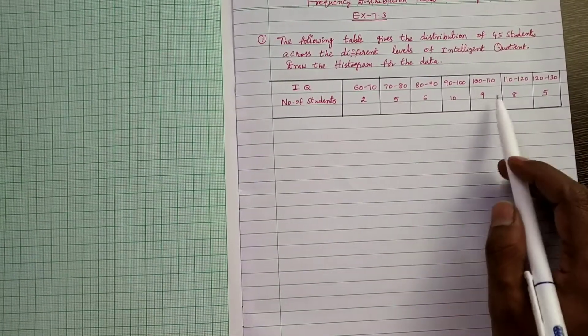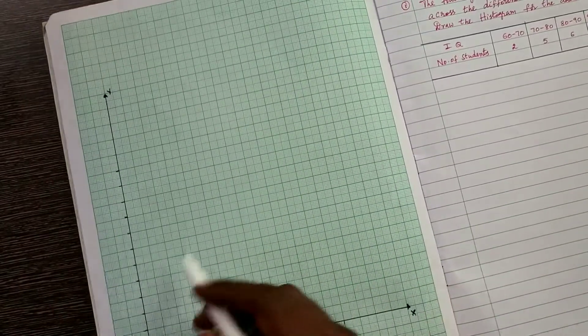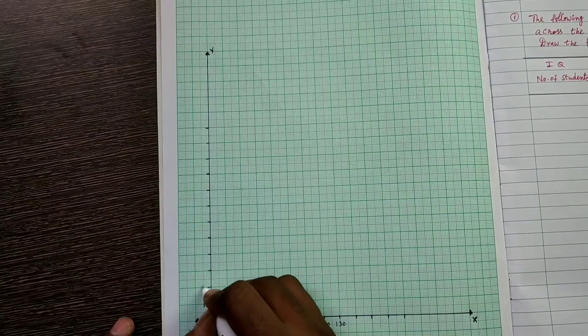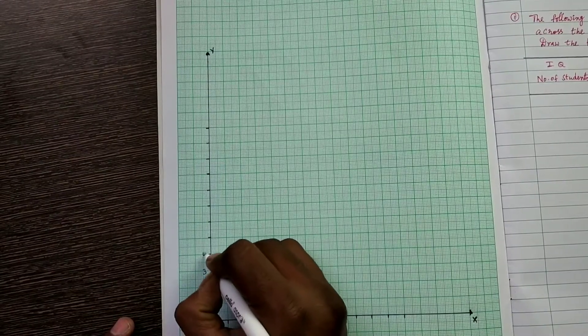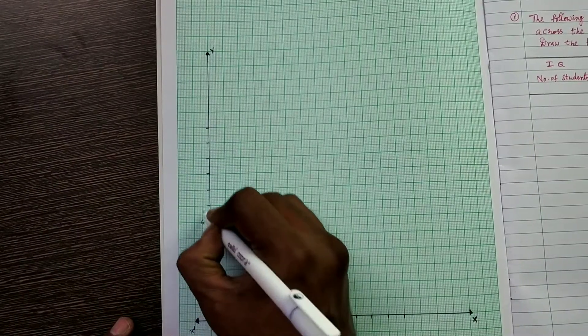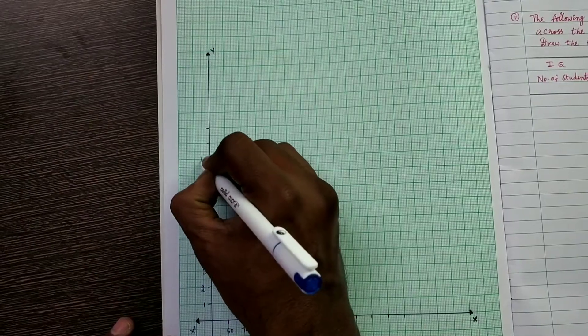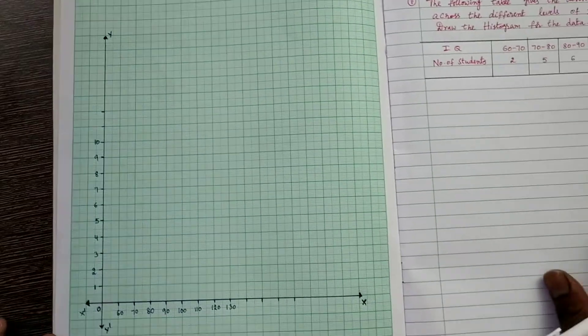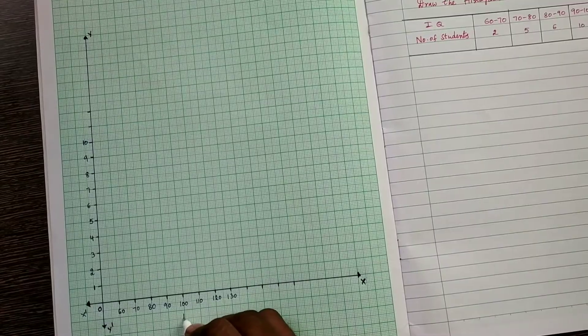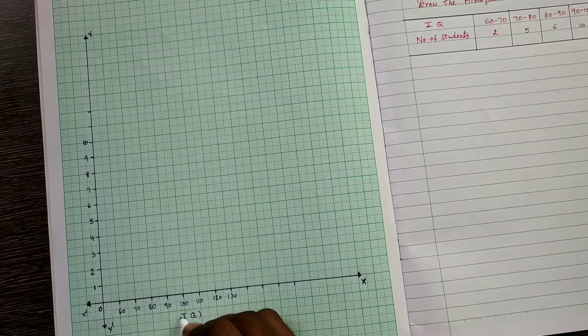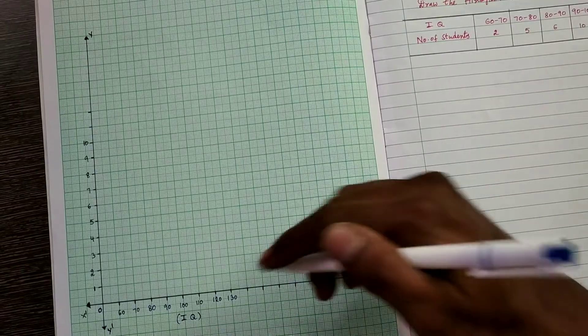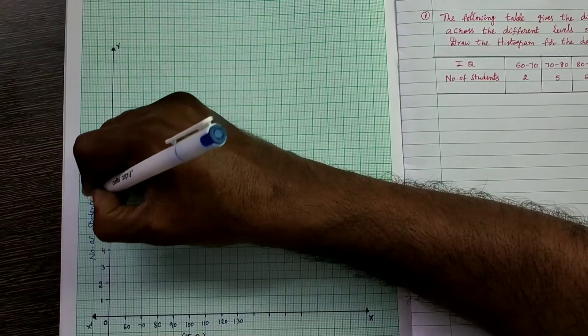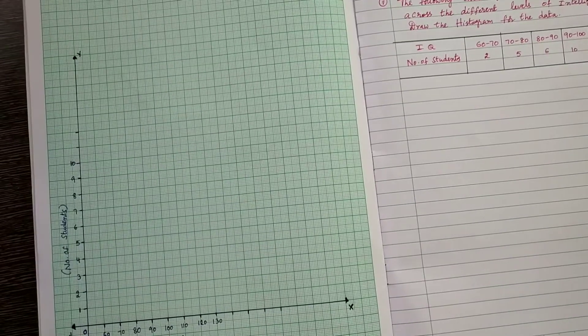And here, the maximum frequency is 9, so up to 10 you can take this. On y-axis, take 1 cm as 1 unit. So 1, 2, 3, 4, 5, 6, 7, 8, 9, 10. This represents the intersecting point of x-axis and y-axis is 0. X-axis represents IQ, so write here IQ, intelligent quotient. Here, y-axis represents number of students.